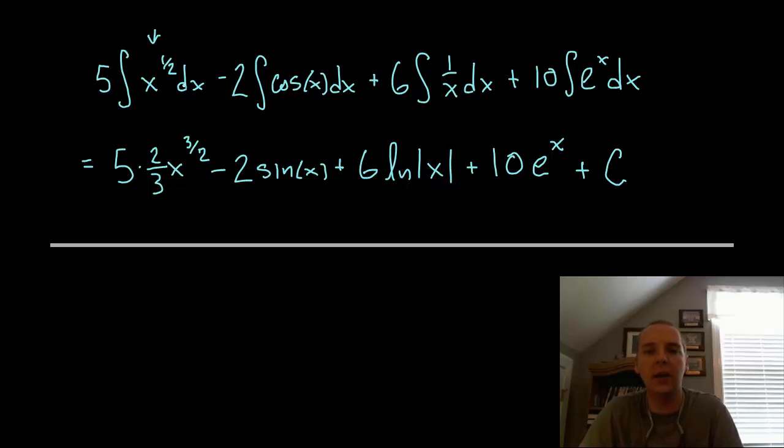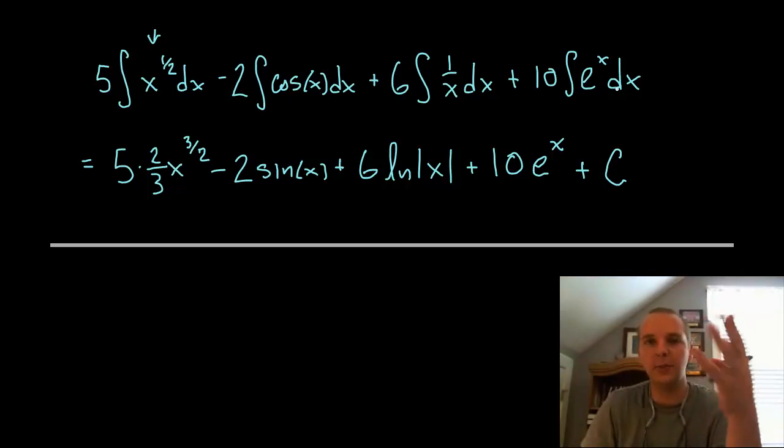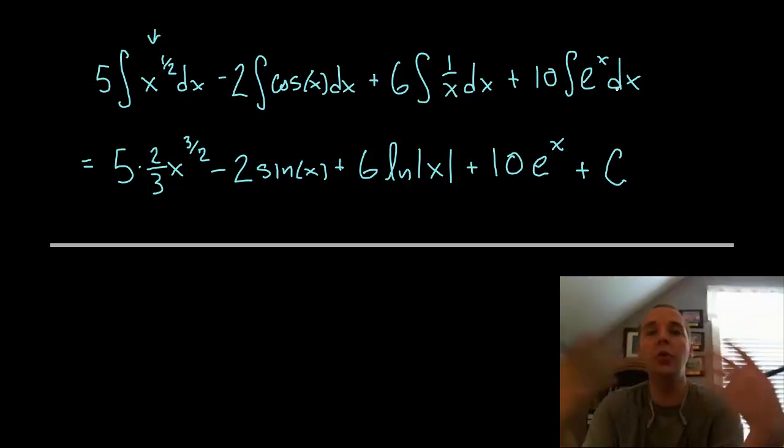Now, you might ask, why did all 4 of these not need a plus c? Well, if you had put a c1, a c2, a c3, and a c4 for instance, a constant plus a constant plus a constant plus a constant will just give you a new constant. So we'll just save all of them and write it as a generic plus c here.